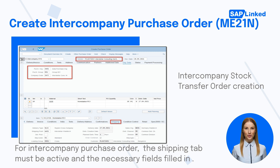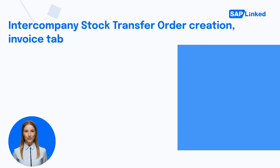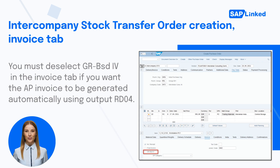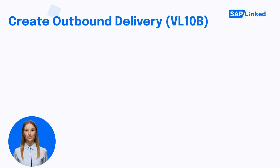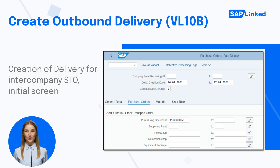You cannot carry out the outbound delivery if the shipment tab is not activated and filled. You must deselect GR-based invoice verification in the invoice tab if you want the AP invoice to be generated automatically using output RD04. To show the stock movement out of the supplier plant, defined as the intercompany vendor, you would need to generate an outbound delivery referencing the purchase order.